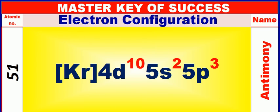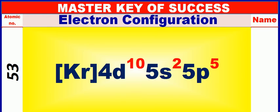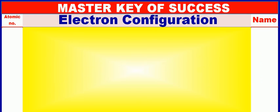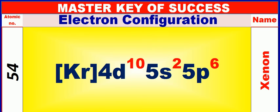Atomic number is 51 and name of atom is Antimony. Atomic number is 52 and name of atom is Tellurium. Atomic number is 53 and name of atom is Iodine. Atomic number is 54 and name of atom is Xenon.